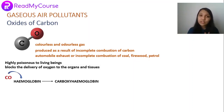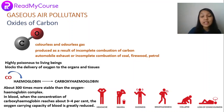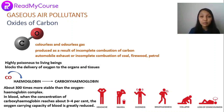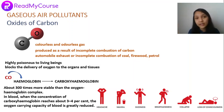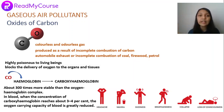What actually happens is that carbon monoxide combines with hemoglobin in our blood to form carboxyhemoglobin. Carboxyhemoglobin is about 300 times more stable than the oxygen-hemoglobin complex, and hence it forms very easily. When the concentration of carboxyhemoglobin in blood reaches around 3 to 4 percent, the oxygen-carrying capacity of the blood is greatly reduced. This causes symptoms like headache, nausea, dizziness, breathlessness, collapse, and even loss of consciousness.